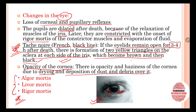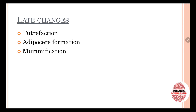The three most important early changes are algor mortis, livor mortis, and rigor mortis — these will each be discussed in detail in separate videos. Late changes include putrefaction, adipocere formation, and mummification — these are also big topics that will be covered in upcoming videos.